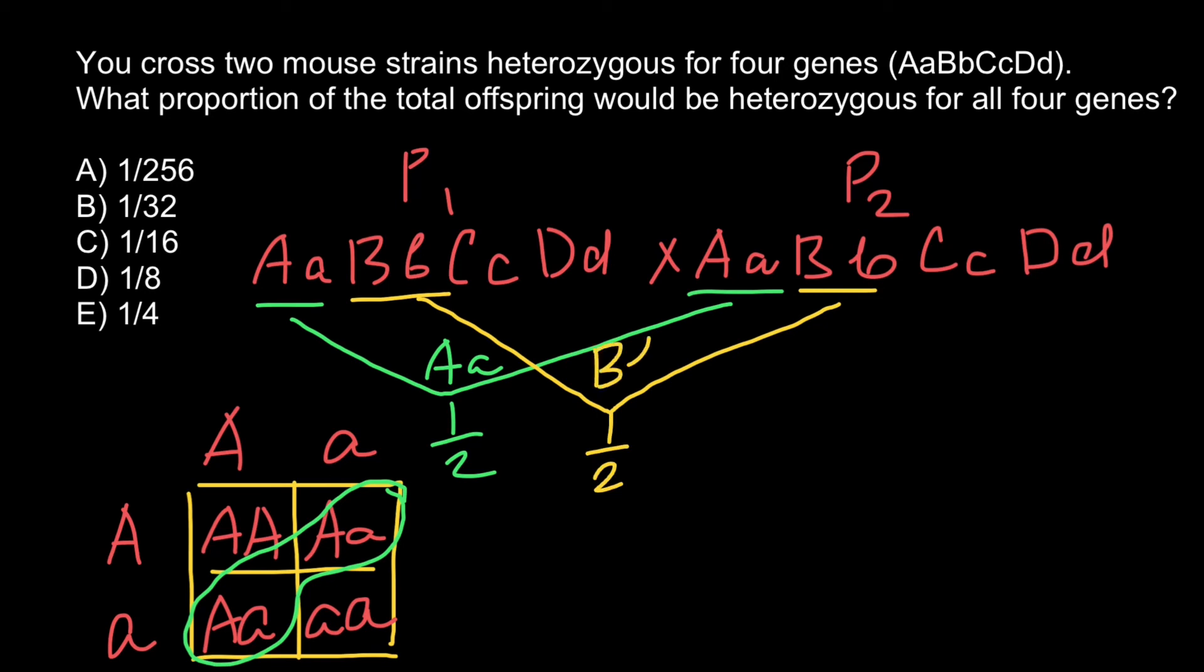For the next set of alleles for gene C, we also expect to see Cc in one half of the progeny.